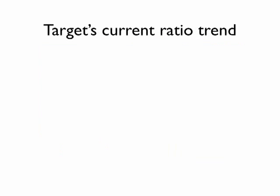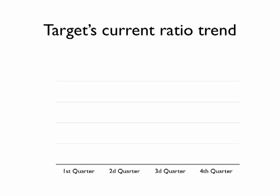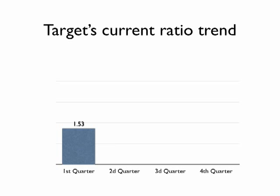Now let's take a look at the trend in Target's current ratio for the last four quarters. As you can see, the current ratio increases from the first quarter to the second quarter, falls in the third quarter, and then rises again in the fourth.